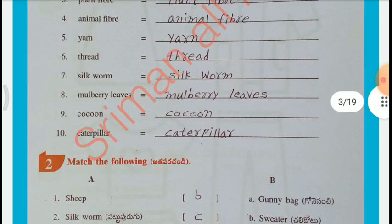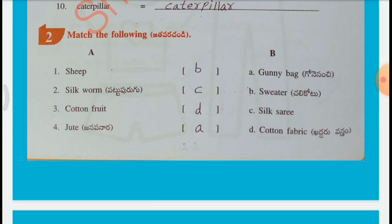Match the following. List A and List B: Sheep — Sweater; Silkworm — Silk Saree; Cotton Fruit — Cotton Fabric; Jute — Gunny Bag.